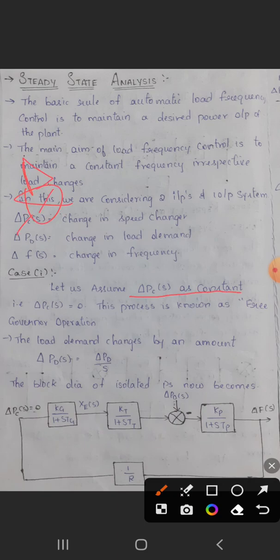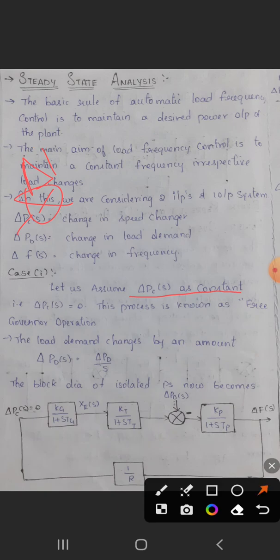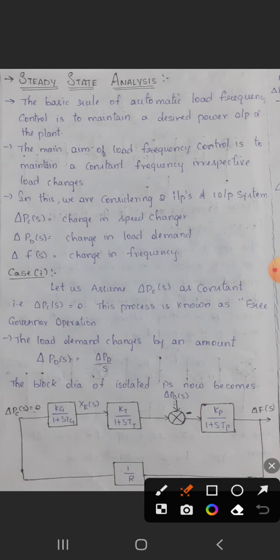Here we have delta PC of S and delta XE, and additionally delta PD of S, with delta F as the final output. Delta PC of S is constant and will be zero — this is called free governor operation. The load demand changes by an amount: delta PD of S equals delta PD divided by S.